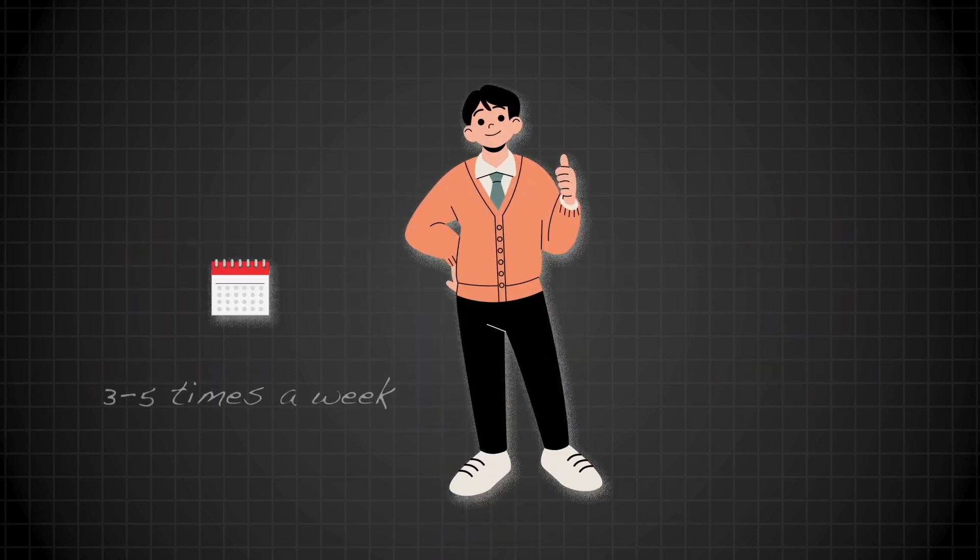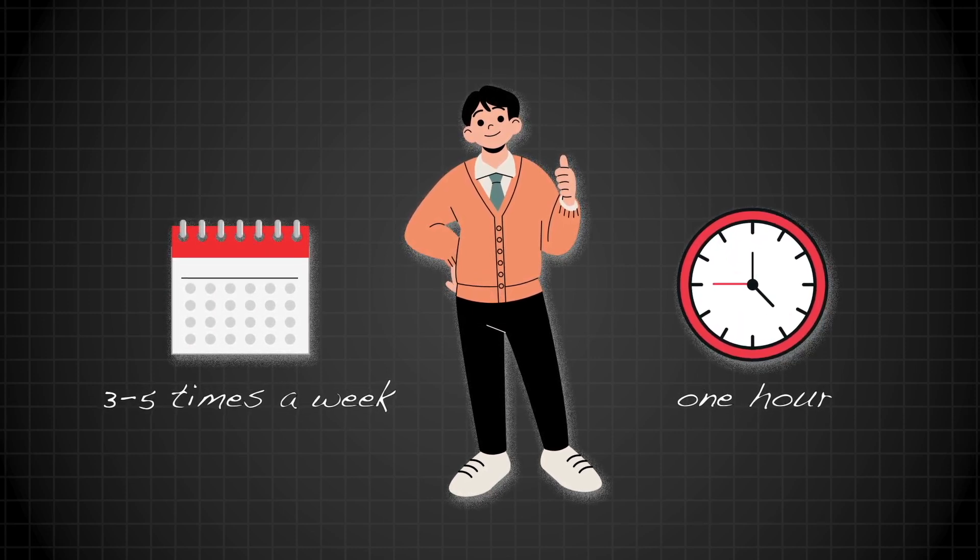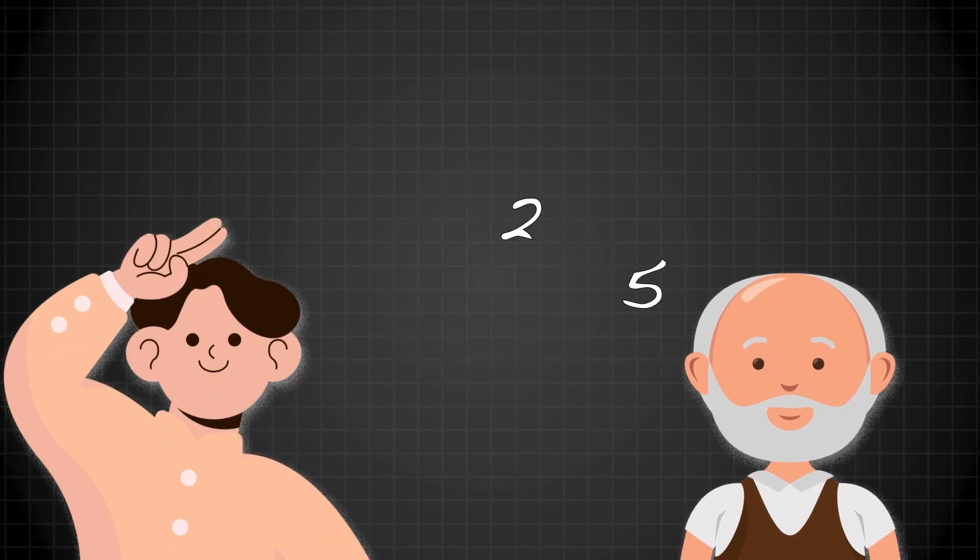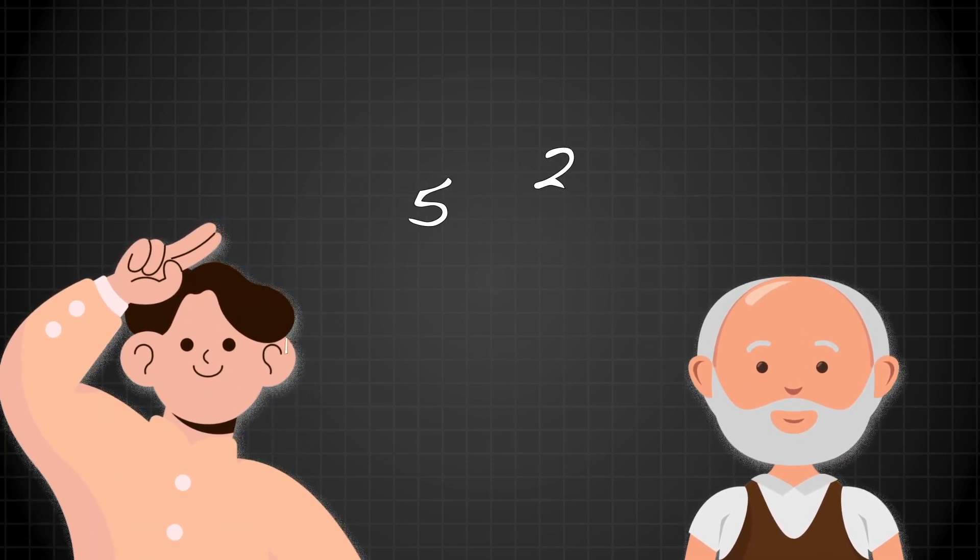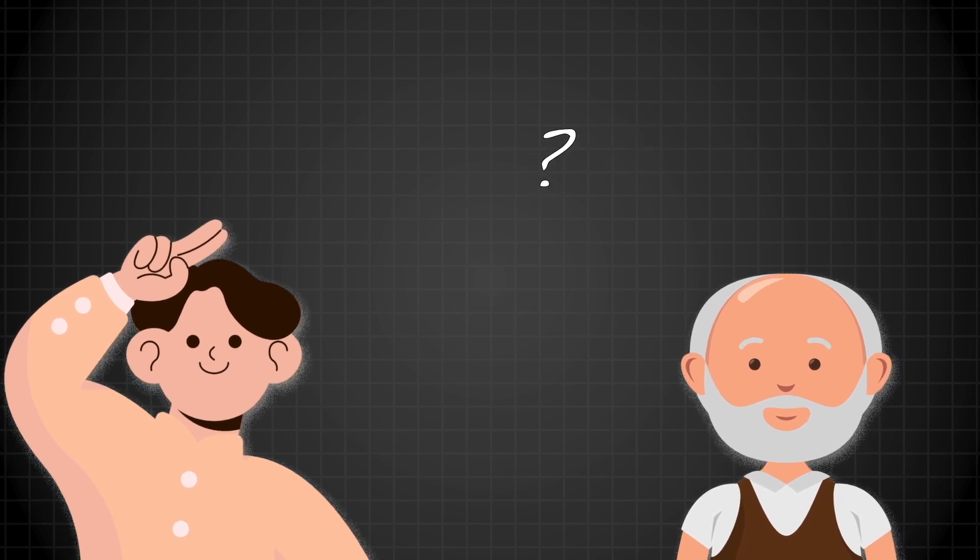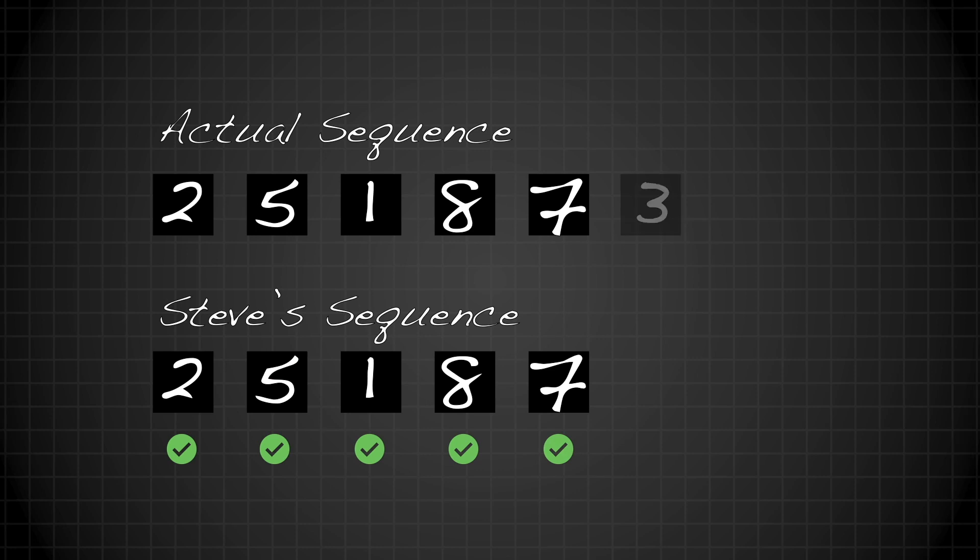Steve would come to Ericsson's lab three to five times a week and take part in a memory span task that lasted about an hour. Ericsson read a random sequence of digits at one digit per second and Steve's job was to repeat all the digits in the correct order back to Ericsson. If he got the sequence correct, Ericsson would increase the number of digits by one. Otherwise, he would decrease it by one.